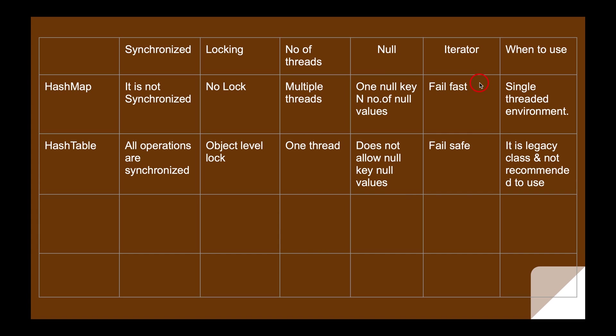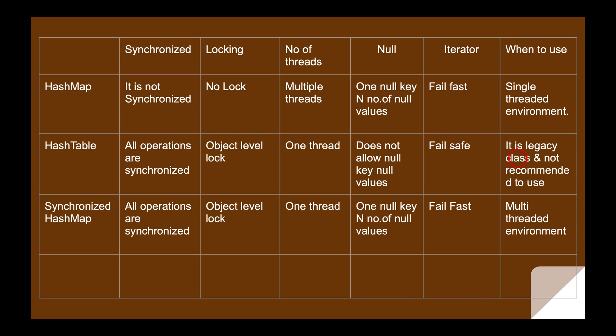HashTable returns an iterator that is fail-safe, meaning it won't throw any ConcurrentModificationException. As for when to use it — HashTable is a legacy class and is not recommended. We have the Collections utility class methods like synchronized map and synchronized list, and we also have ConcurrentHashMap, so HashTable as a legacy class should not be used.